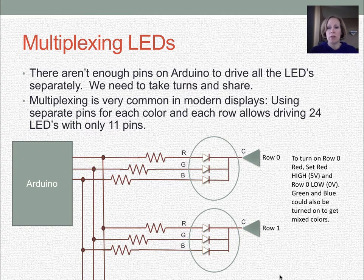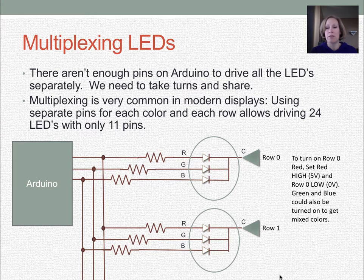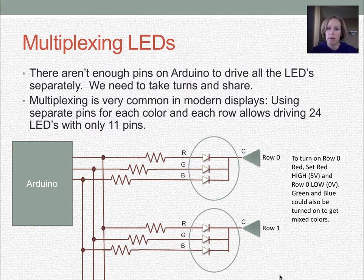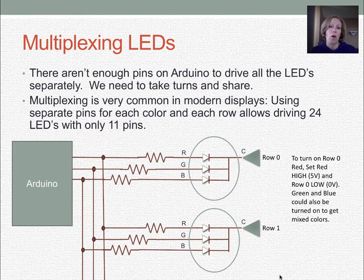To turn on row 0 red, we would set the pin connected to red high and set the pin connected to row 0 low — that turns on the LED in position 0 as red. We can do the same for green and blue, or turn them all on and use pulse width modulation to get mixed colors.